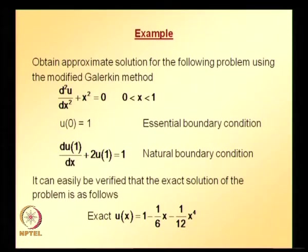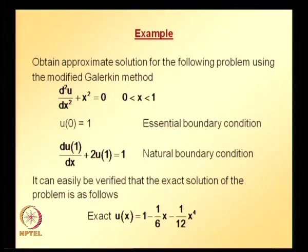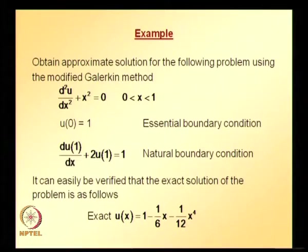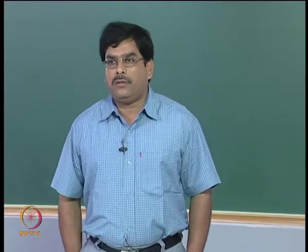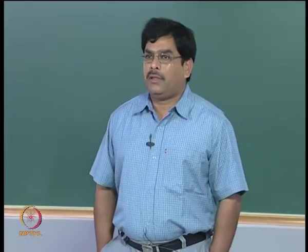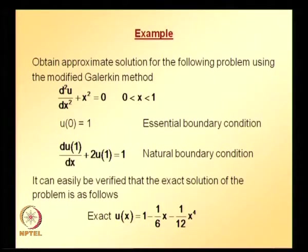Now we look at the next problem, which we also solved using a variational method, and we will now solve it using the modified Galerkin method. The problem is: the second derivative of u with respect to x² plus x² equals zero, on the domain 0 to 1. The essential boundary condition is u(0) = 1, and the natural boundary condition is u′(1) + 2u(1) = 1. The exact solution is u = 1 − (1/6)x − (1/12)x⁴.